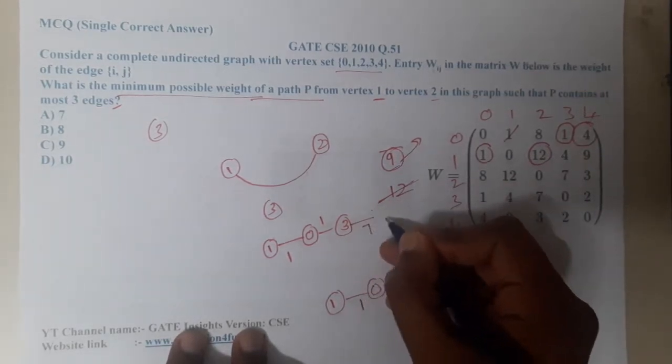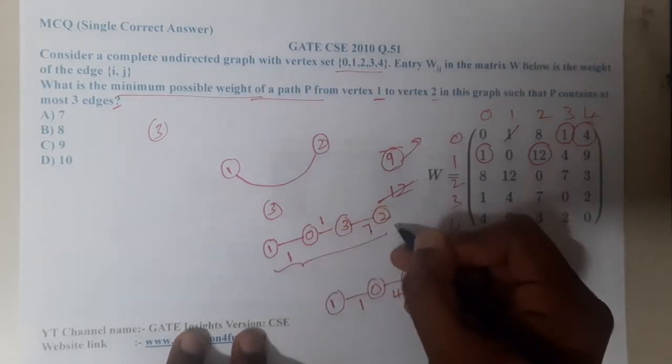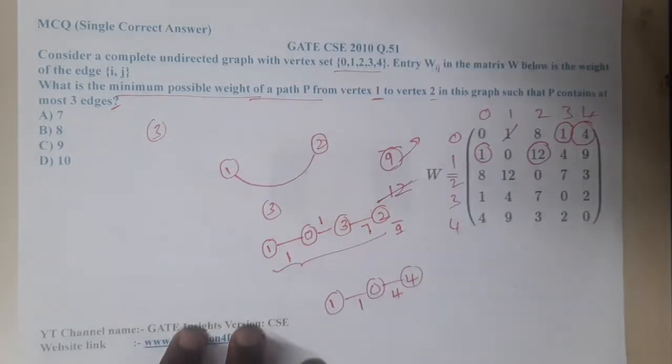My goal is to reach 2. From 3, can I reach 2? The cost is 7. So the total cost here is 7, 8, and 9. Here also again the cost is 9. We are having two possibilities for 9. Let us continue this path now.